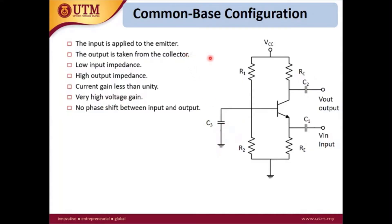The last configuration for BJT amplifier is the common base configuration. In this circuit, the input is connected to the emitter and the output is connected to the collector, so the base is unused — that's why it's called common base. The characteristics are: low input impedance, high output impedance, current gain less than unity, very high voltage gain, and no phase shift between input and output — meaning there is no inversion of the signal.